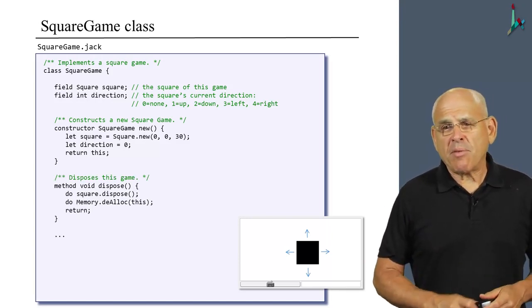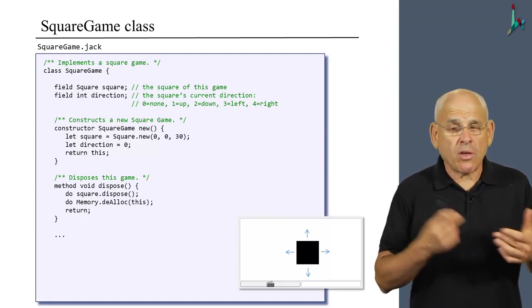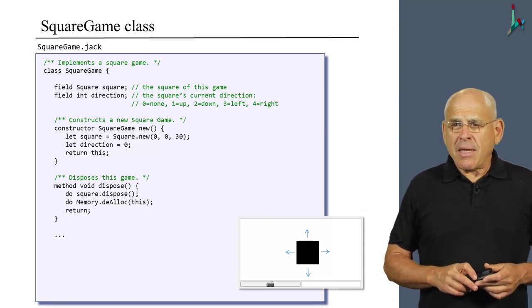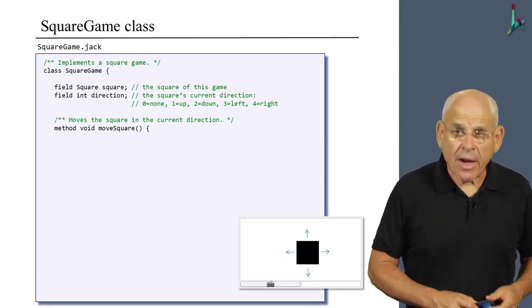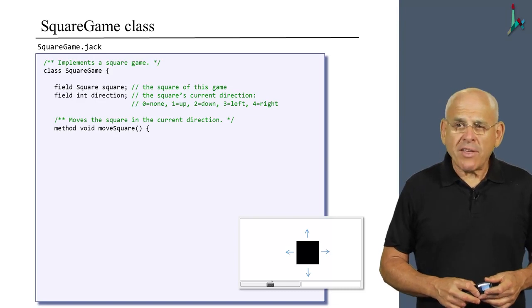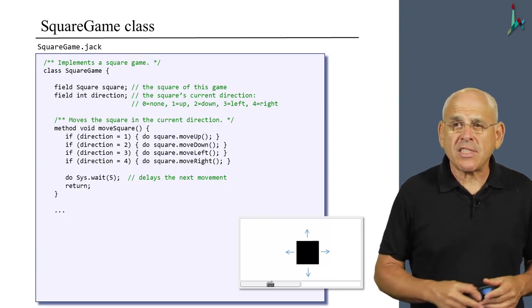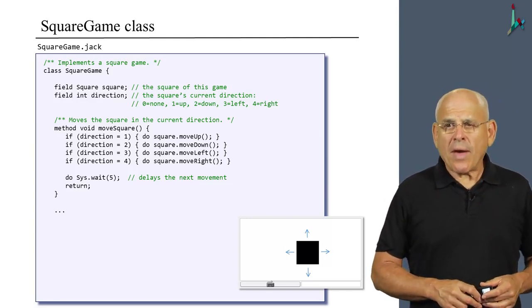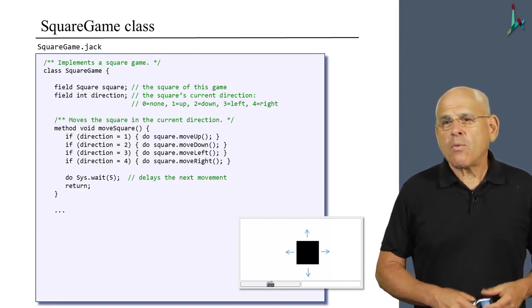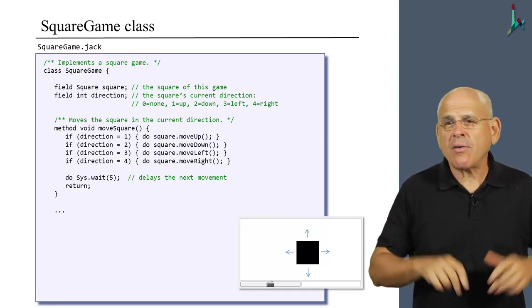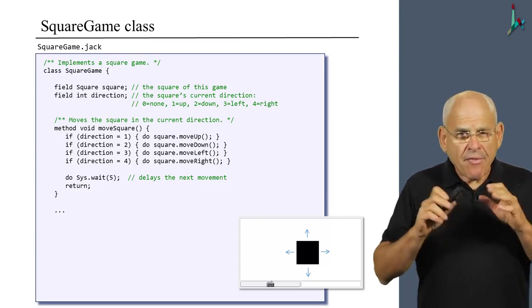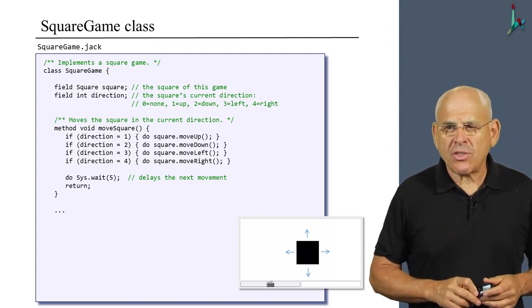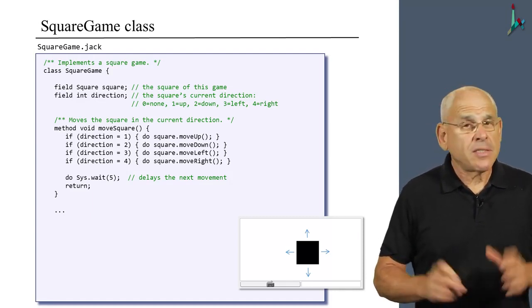Dispose is standard, but before we dispose our object, we make sure to also dispose the square that we created. We act as responsible citizens. MoveSquare is a routine designed to move the square. It's not obvious to me that it belongs to this class - we could have put it also in the Square class. So it's a matter of judgment. How do we do it? If the direction is 1, we want to move the square up. If the direction is 2, we want to move it down, and so on and so forth. After we move the square, we do a sysWait 5 because we want to delay the animation somewhat.